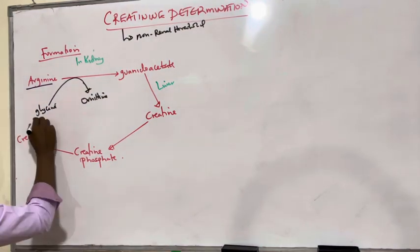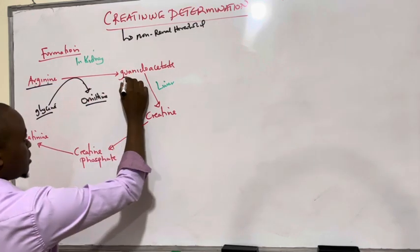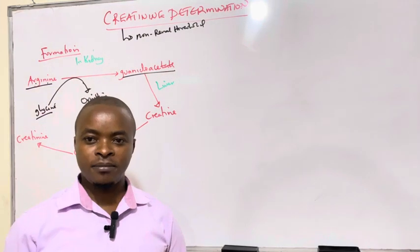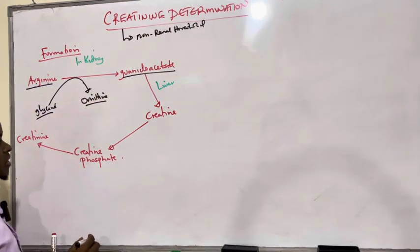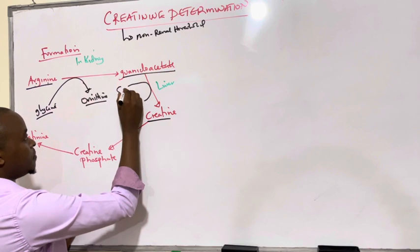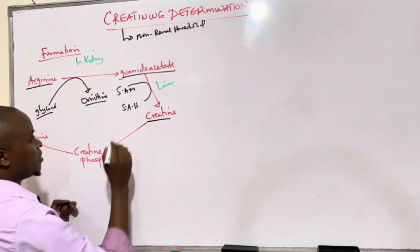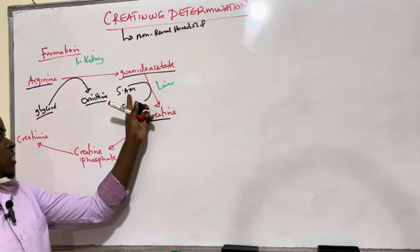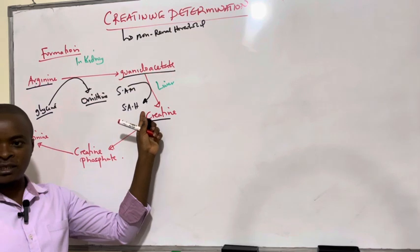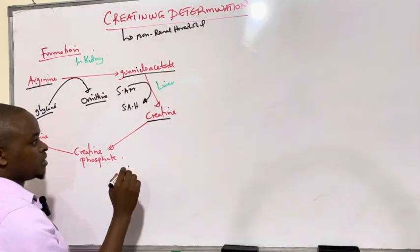In the kidney, we see glycine when it is added to arginine to form ornithine; arginine is converted to guanidoacetate. This guanidoacetate is transported in the blood and taken to the liver. Within the liver, this guanidoacetate is converted to creatine in the presence of SAM. SAM is S-adenosyl methionine, being converted to S-adenosyl homocysteine. During that conversion, we see it converting guanidoacetate to creatine.